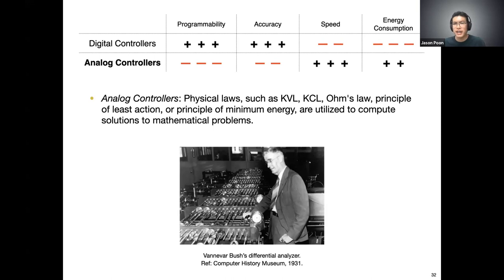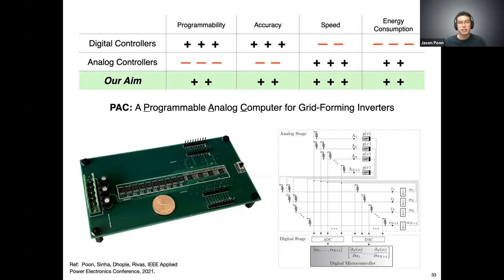However, it turns out that in terms of speed and energy consumption, there's been recent work showing that for a certain class of problems, these types of analog controllers can actually vastly outperform their digital counterparts. We were wondering: can we do a Goldilocks type thing, combine the best of both worlds — a little bit of digital, a little bit of analog — and somehow get an overall solution that is programmable, accurate, high speed, and also doesn't consume too much energy? So what we developed was what we call PAC, a programmable analog computer for grid-forming inverters.